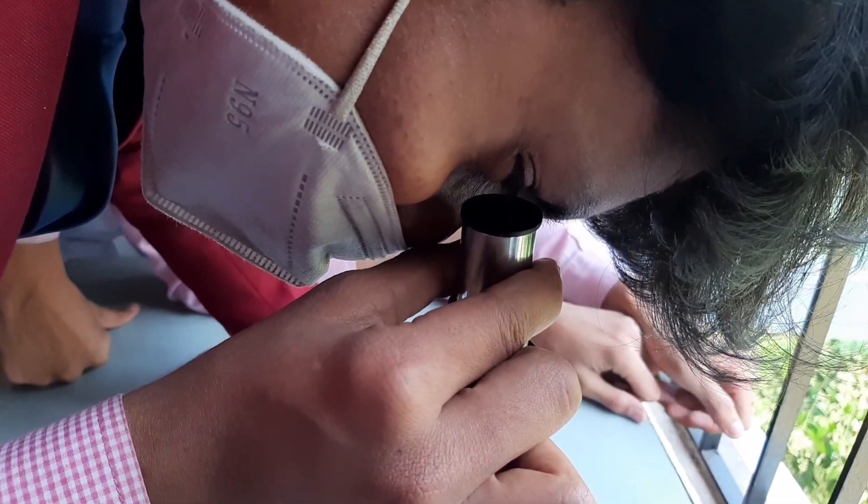In parenchyma tissue, you will see that the cells are isodiametric, which means the cells have equal length and width, and the cells are loosely packed.